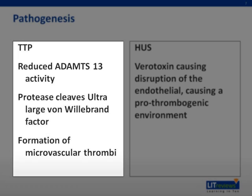The pathogenesis behind TTP is due to the deficiency of ADAMTS13. ADAMTS13 is a metalloprotease which cleaves high molecular weight, or ultralarge, von Willebrand factor to smaller von Willebrand factor. The ultralarge von Willebrand factor is very thrombogenic, and its presence triggers the development of microthrombi in the microvascular circulation. The microvascular thrombi cause mechanical damage to the red blood cells and the typical picture of TTP.